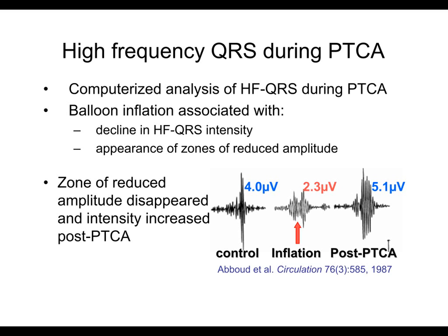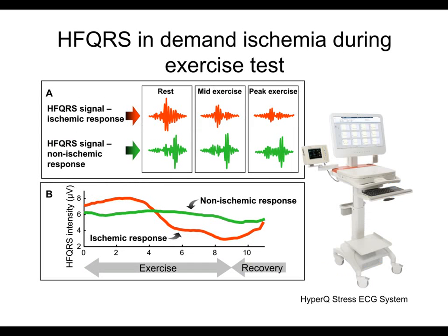A study in humans undergoing angioplasty of the LAD artery confirmed the results in animal models. Reduction in the amplitude of the HFQRS could be observed during balloon inflation as a result of ischemia. The root mean square amplitude of the HFQRS in the example shown at the bottom right corner decreased from 4 microvolts to 2.3 microvolts during inflation. RAS is also seen at the mid-QRS segment marked by the red arrow.